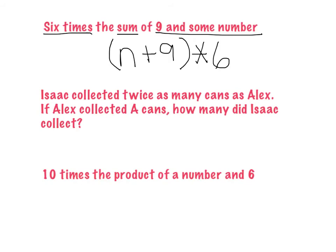Here's another situation. Isaac collected twice as many cans as Alex. If Alex collected a cans, how many did Isaac collect? So pause the video and try that one on your own. If Alex collected a cans, Isaac collected twice as many. So a times 2.